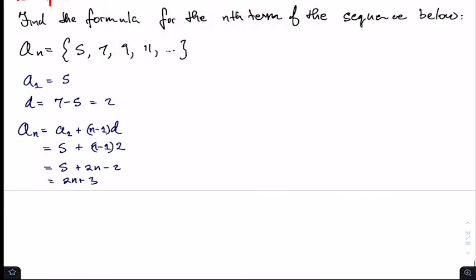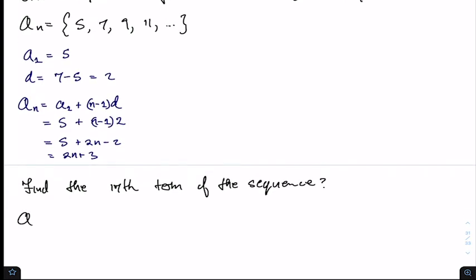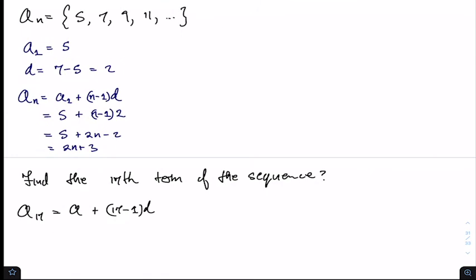How would we use this formula? A question could ask us to find the 17th term. So here we would want to find a sub 17, which is equal to a plus 17 minus 1 times d. Or since we already have the formula, a sub 17 is actually equal to 2 times 17 plus 3.